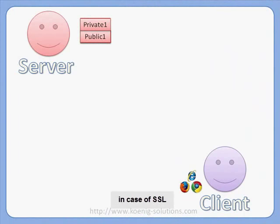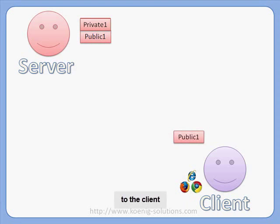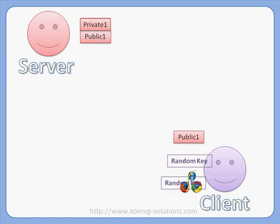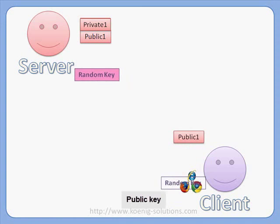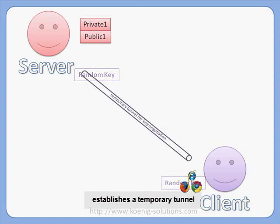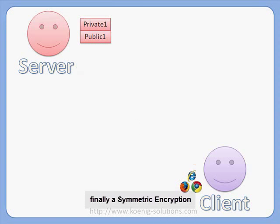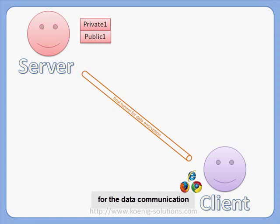In the case of SSL, when a public-private key pair is available only with the server, here is how it works. As the client opens a browser and requests access from the secure server, the server sends its public key to the client. As the client does not have a public key to offer, it generates a random key, encrypts it with the server's public key, and sends it to the server. The server applies its own private key to decrypt the random key and establishes a temporary tunnel. The final key negotiation takes place using this temporary tunnel, and finally a symmetric encryption tunnel is established for data communication.